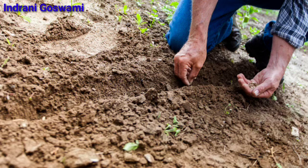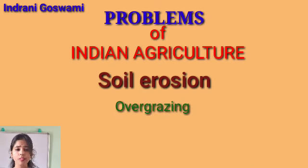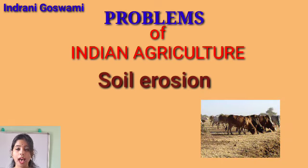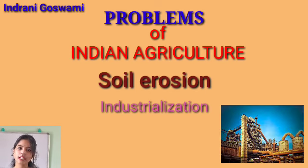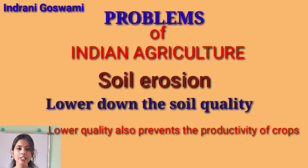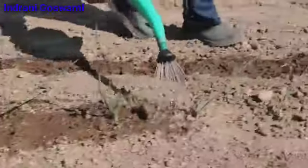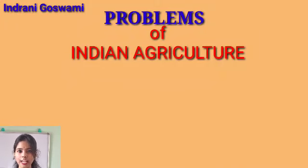Number three is soil erosion. Soil erosion means the quality of the soil degrades and the soil is washed out. The basic causes of soil erosion include deforestation — cutting down of trees — overgrazing, and industrialization. These factors lower the quality of the soil, so the productivity of the soil is hampered, which obviously affects the crops grown in that soil. This is one of the major problems related to Indian agriculture.